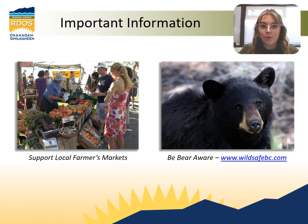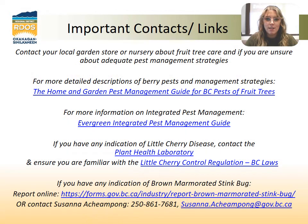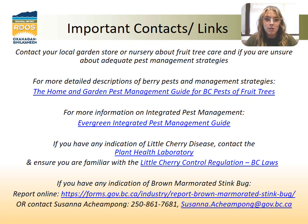For more information on pests that affect different fruit trees, there are fact sheets available on the RDOS website that are available to anyone considering planting a fruit tree and are organized by fruit tree type. These are some important contacts and links that you should have readily available if you're considering planting a fruit tree or already have one. There are two links that you should read on general care and pest management tools that are extremely helpful and are important reference guides. Additionally, if you have any indication of little cherry disease, you should contact the Plant Health Laboratory, and even before planting your cherry tree, you should understand that there is a BC law that dictates you have a responsibility to prevent the spread of this disease. If you have any indication of brown marmorated stink bug, another potentially disastrous problem for the Okanagan Similkameen, you should report it online or contact Susanna from the BC Ministry of Agriculture.